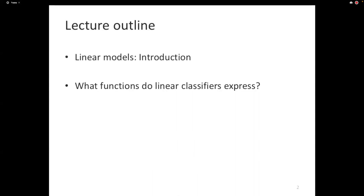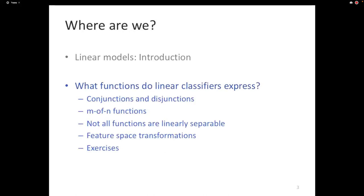We looked at an introduction to linear models and why these are interesting. Today's lecture continues that discussion. What kinds of functions do linear classifiers express? In a perfect world, we'd want classifiers that can express every function of interest. Since we don't know what functions are of interest, we'd like classifiers that express a large class of potentially interesting functions. Linear classifiers do express a large class, but not all — which means learning might be possible due to restriction in the hypothesis space.